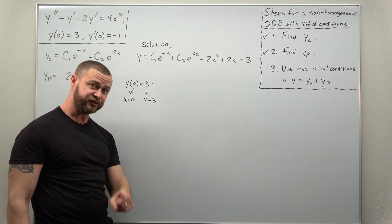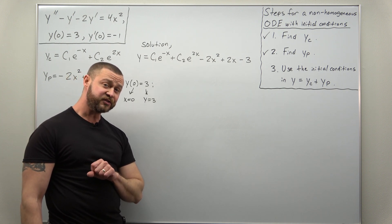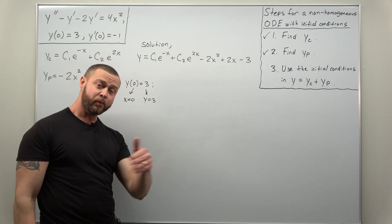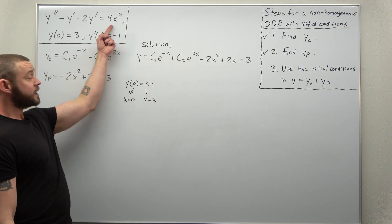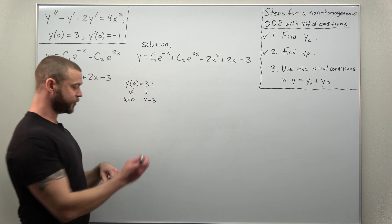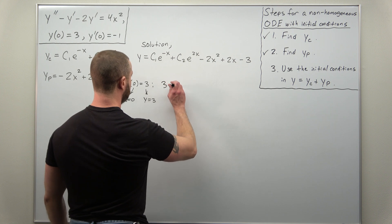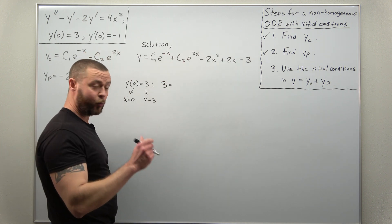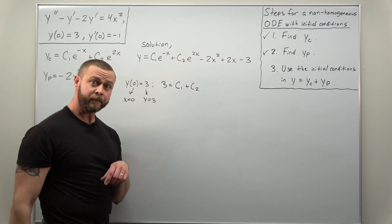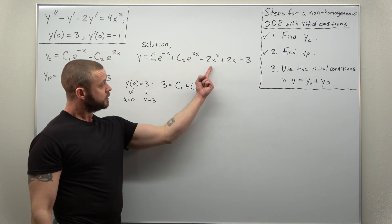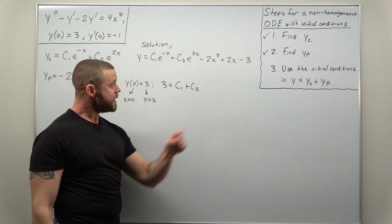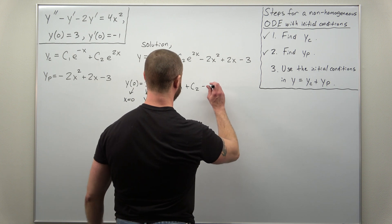And that's going to change your values for this non-homogeneous ODE's coefficients, C1 and C2, compared to what you did before where the right-hand side was zero. All right. If we plug that in, our Y value is three, your exponentials become one. So we have C1 plus C2. And the middle terms here from your particular solution, they go away, but you're left with negative three or minus three.